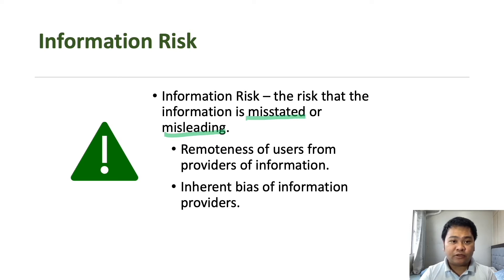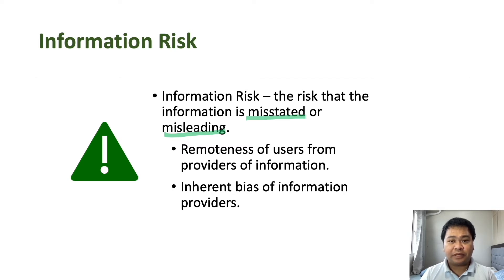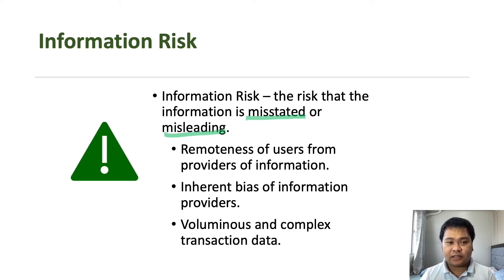Another cause of information risk is the inherent bias of information providers. Those responsible parties have the incentive to relay information that might be beneficial to them. Even if the information would negatively impact the perception of their performance, they might not be willing to share that with users of information, thereby resulting in information risk.